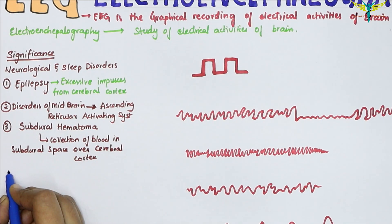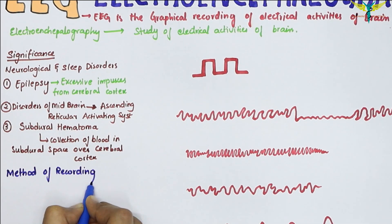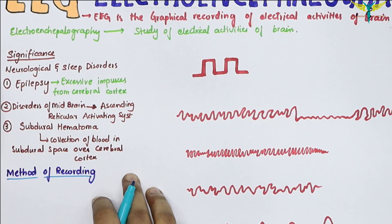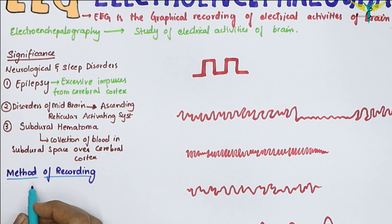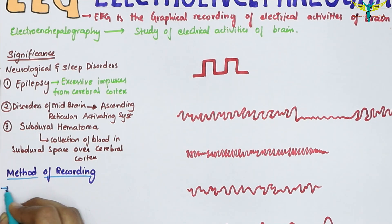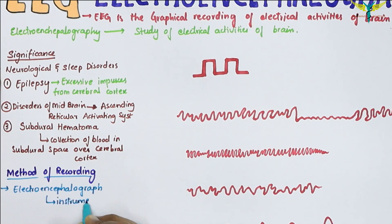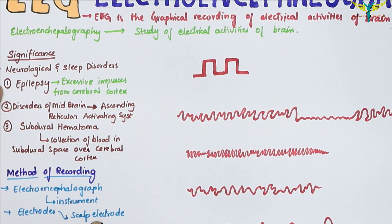The methods of recording EEG: the electroencephalograph is the instrument that records the EEG, and the electrodes are called scalp electrodes. These are placed over the unopened skull, or over the brain after opening the skull, or by piercing into the brain.